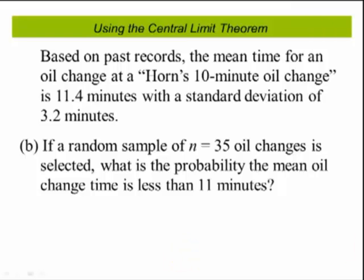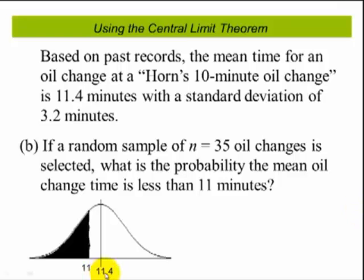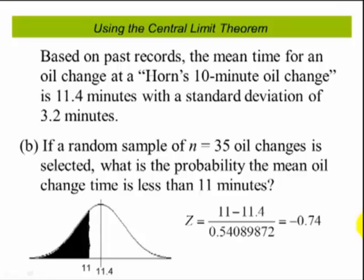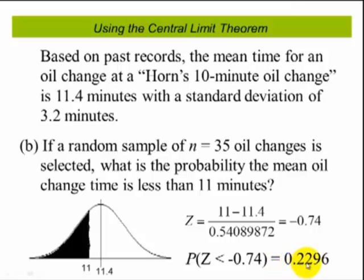Part B: if a random sample of n equals 35 oil changes is selected, what is the probability that the mean oil change time is less than 11 minutes? We know the distribution, its mean, and its standard deviation. We draw a picture — the mean is 11.4 — and compute the z-score: take x equals 11, minus the mean 11.4, divided by the standard error. We get negative 0.74. Looking up negative 0.74 in table 5, we get a probability of 0.2296.